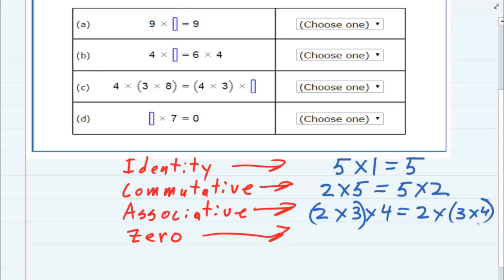And then the zero property says that if you take any number and you multiply by zero, your result will be zero. So that's our zero property.